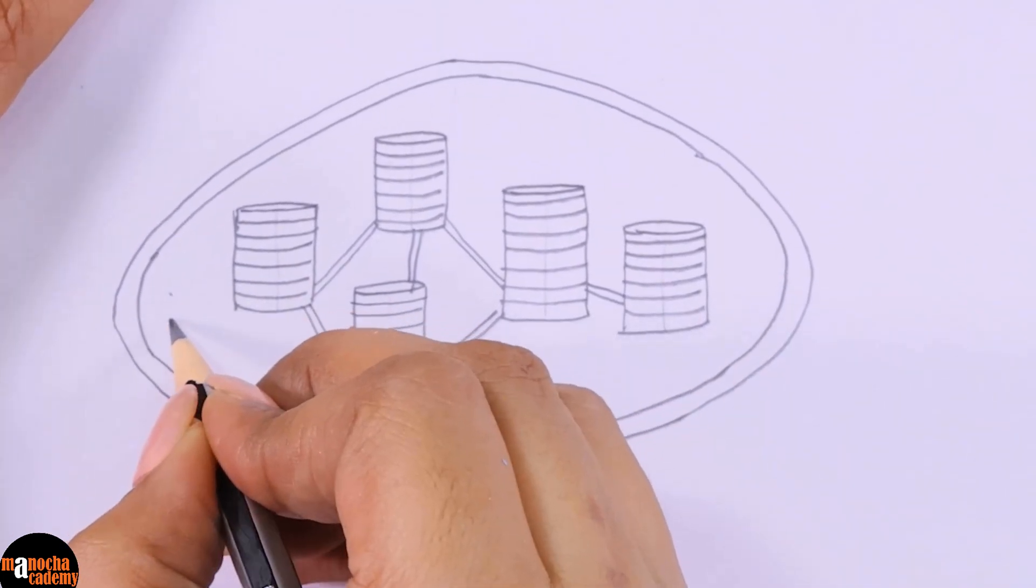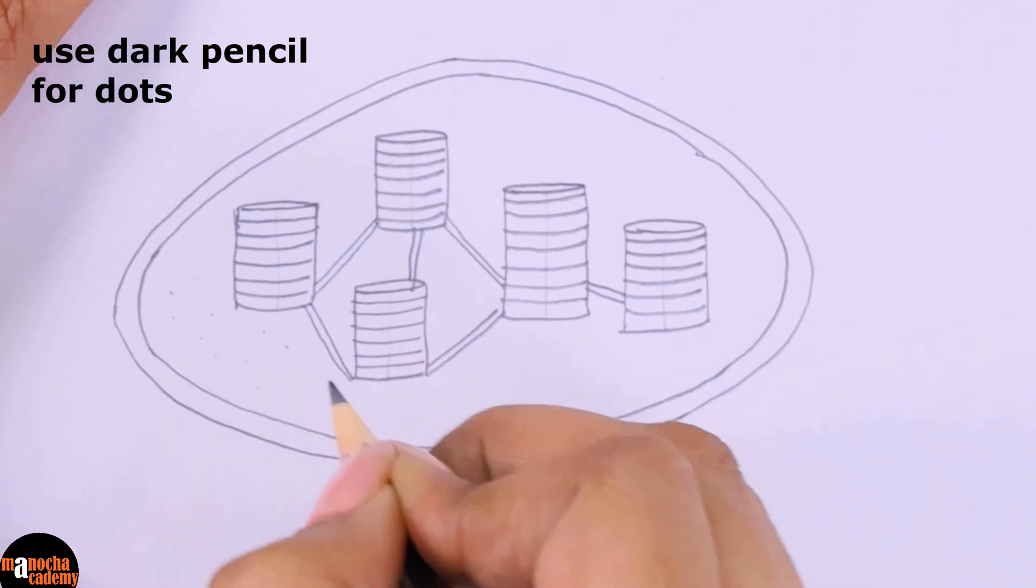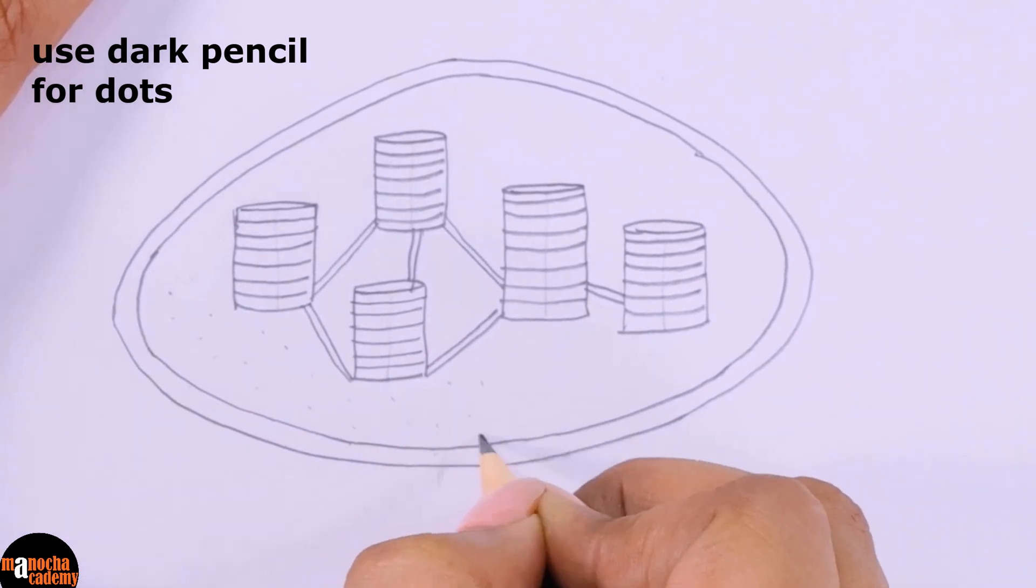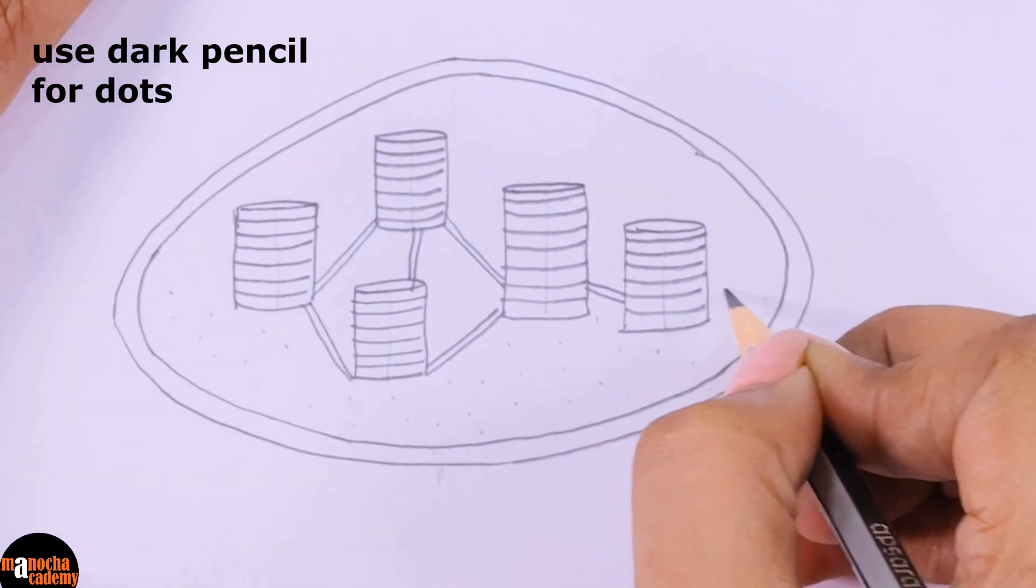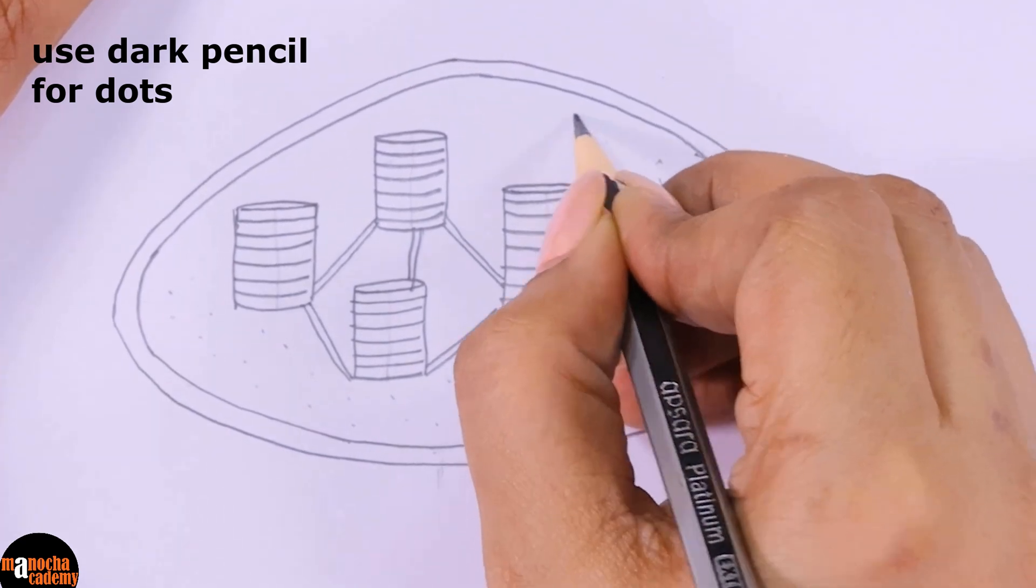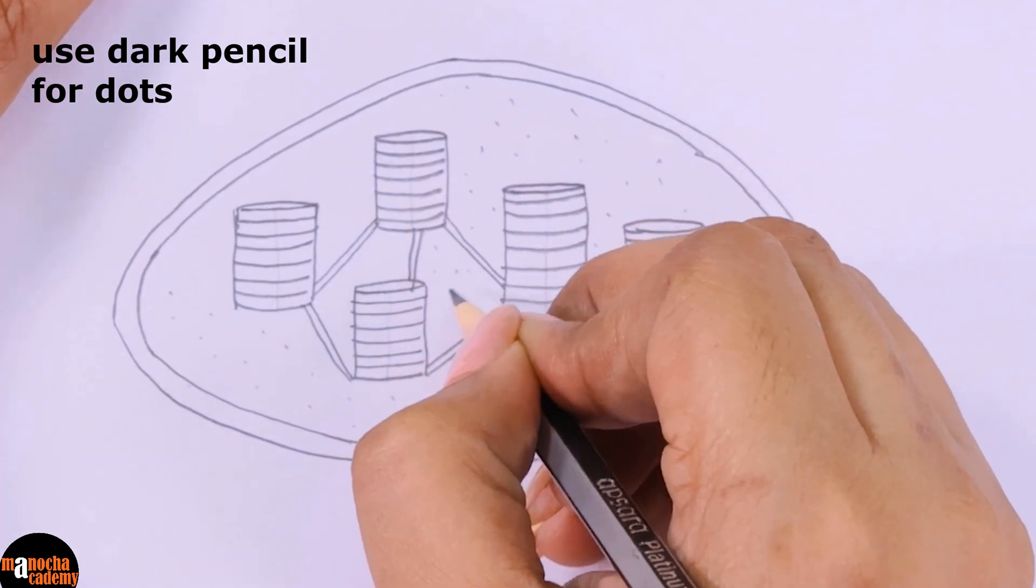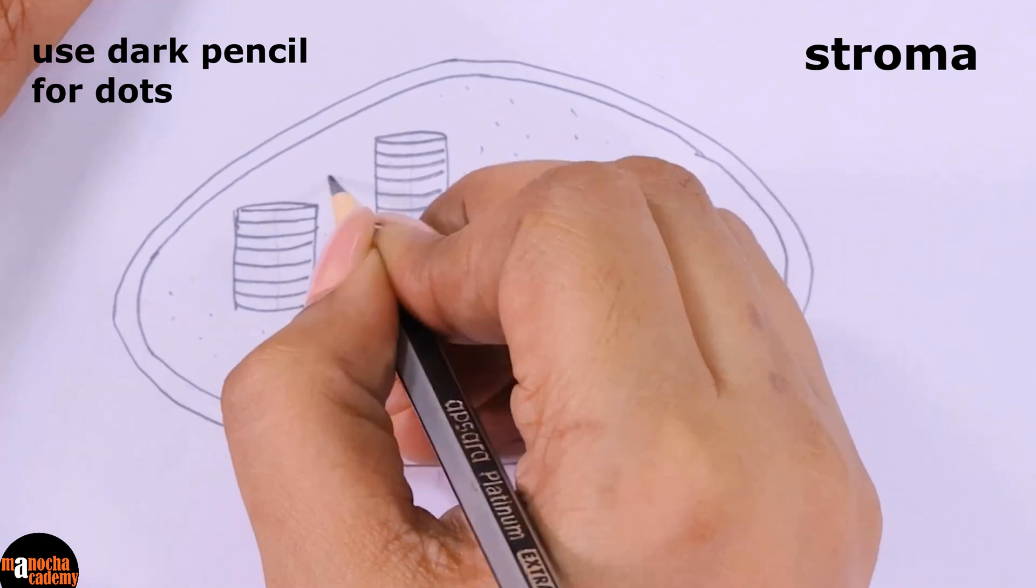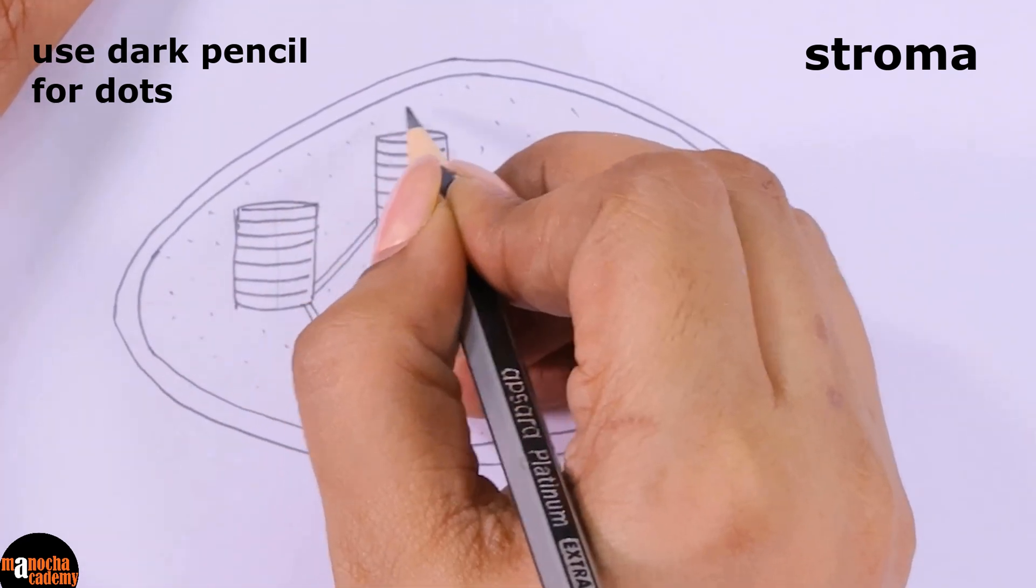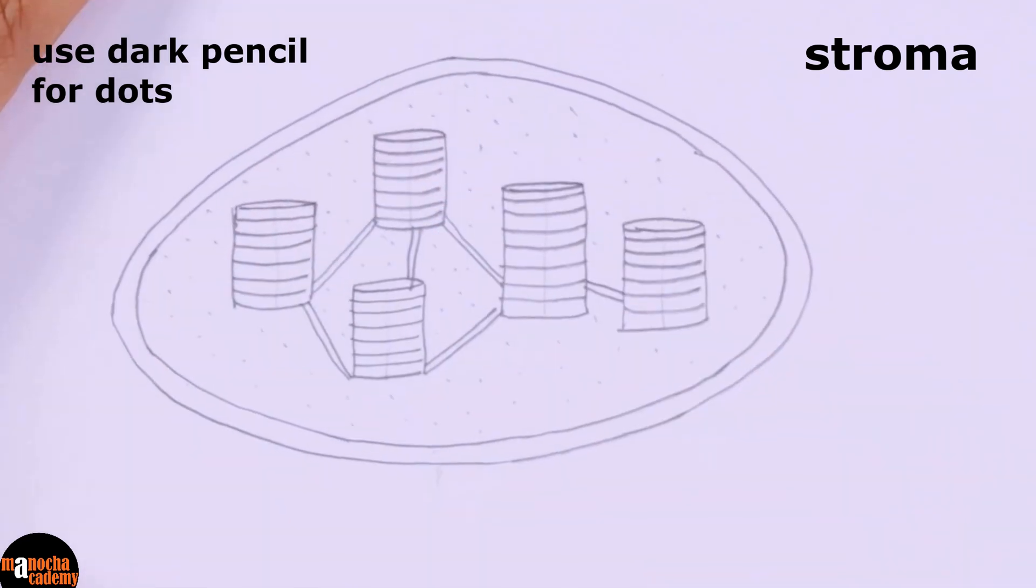Now we will put dots to show that the chloroplast is filled with a jelly like matrix. I am sure you know that this matrix is known as stroma. Be careful with the dots. Do not rush. The dots should look like dots and not lines.